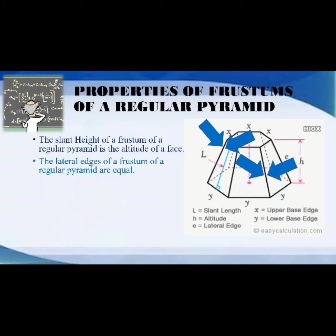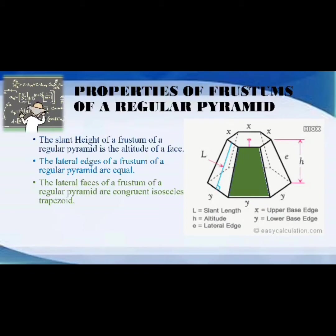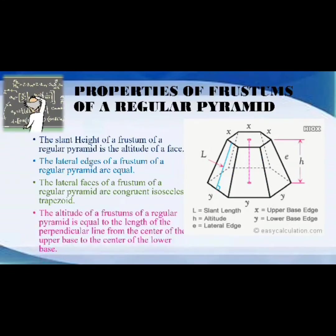Third, the lateral faces of a frustum of a regular pyramid are congruent isosceles trapezoids — when we say congruent, they are all equal in length, width, and area, all equal in measurements. The last property is that the altitude of a frustum of a regular pyramid is equal to the length of the perpendicular line from the center of the upper base to the center of the lower base.